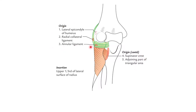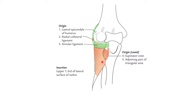So, the origin of the supinator muscle has two bony origins and two ligamentous origins. The two bony origins are: one from the lateral epicondyle and second from the supinator crest. The ligamentous origins are from the radial collateral ligament and the annular ligament. These muscle fibers descend down and laterally to reach the upper two-thirds of the lateral surface of the radius, just above the anterior oblique line, which gives the insertion of the supinator muscle.